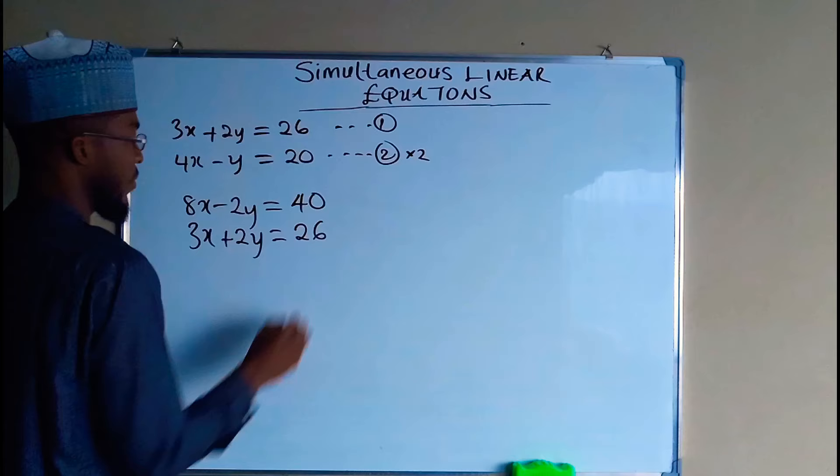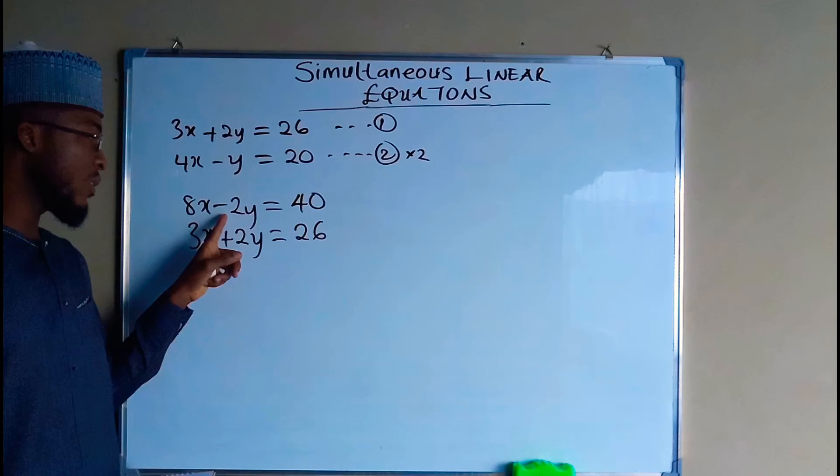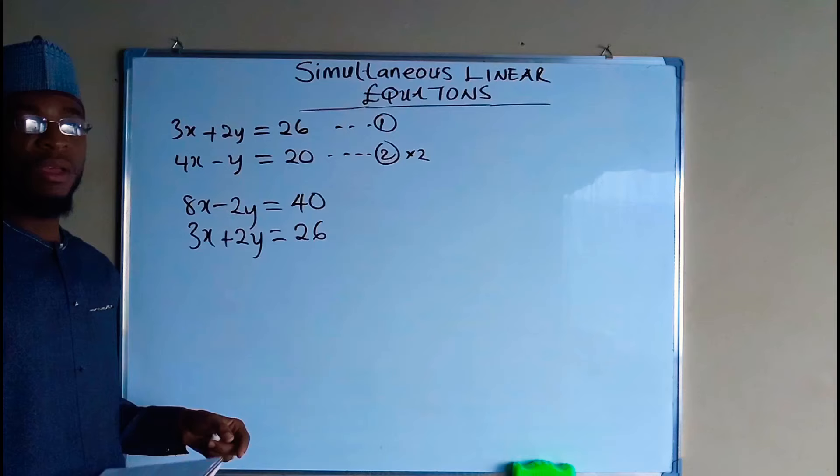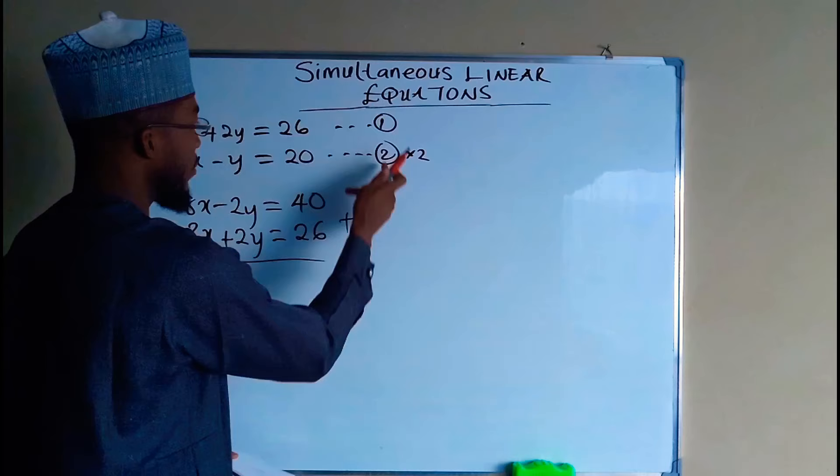Now we want to eliminate y, so because 2y here is negative while the other 2y here is positive, if you add them together you are going to get zero. So we add equation one by equation two.